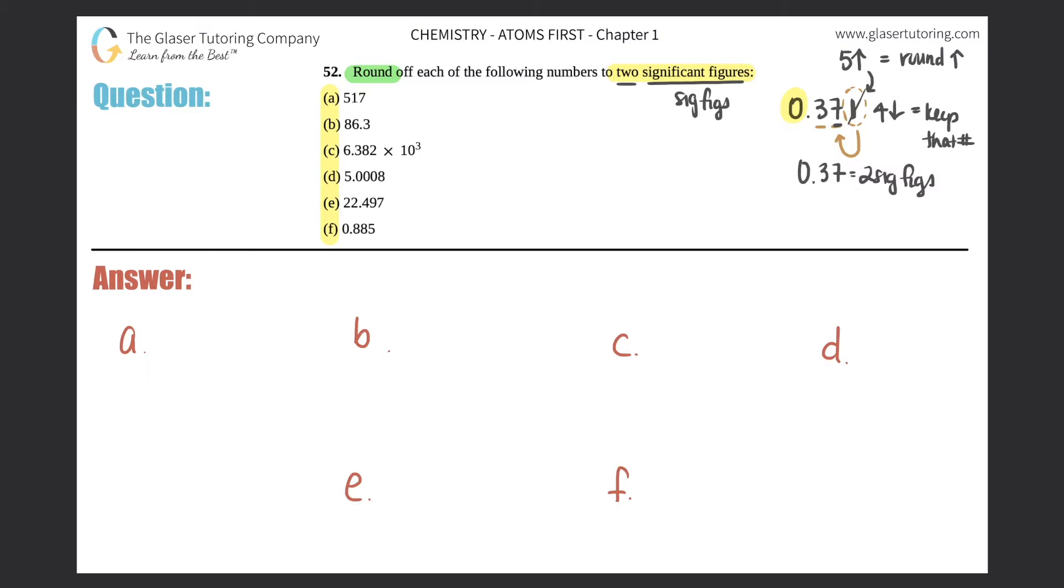Let's do 517, letter a. The first two sig figs that I have is the 5 and the 1, so those are definitely staying. But now you just have to look next door to see if the 1 will be the same or if it will be raised up. So a 7 is greater than 5, 5 or greater, so this 1 would turn into a 2. So it would be 5, 2.